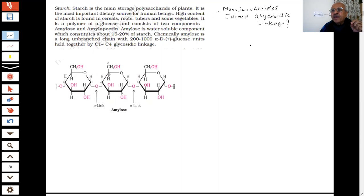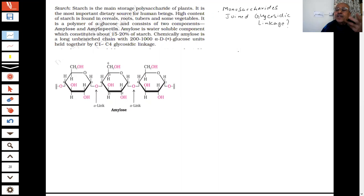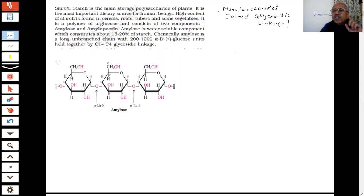If the number of monosaccharide units is 10, how many glycosidic linkages will there be? This question has been asked. When there are two units, there is one linkage; three units, two linkages; four units, three linkages. So there will always be one less than the total number of monosaccharide units.